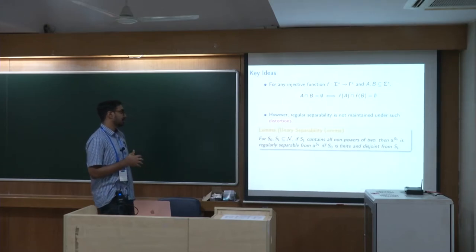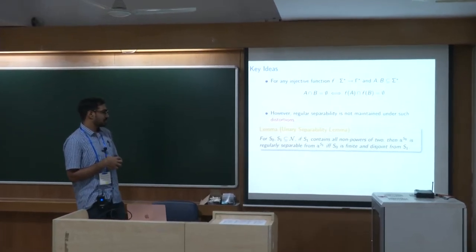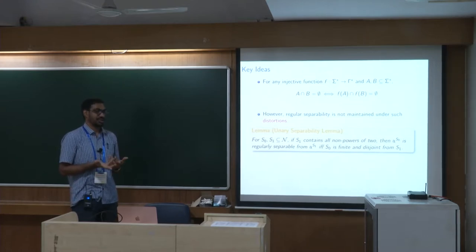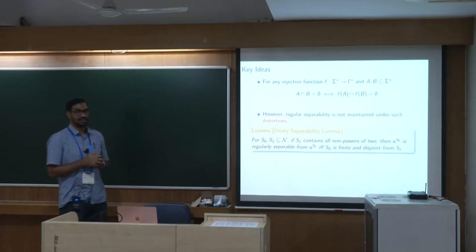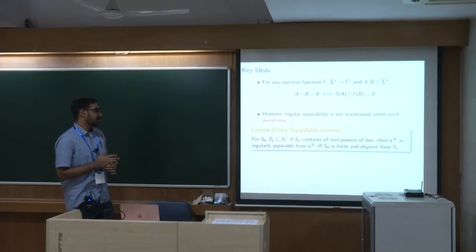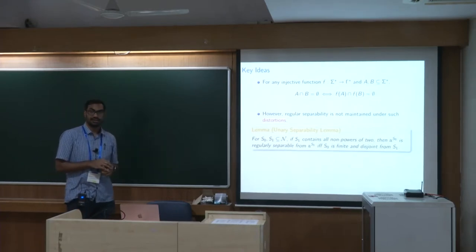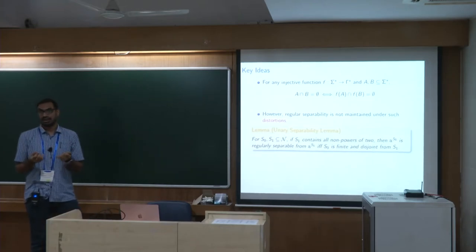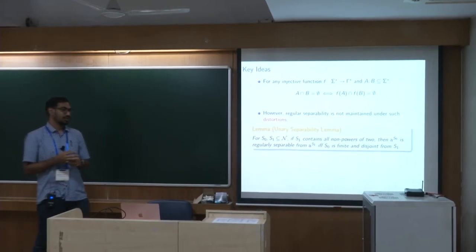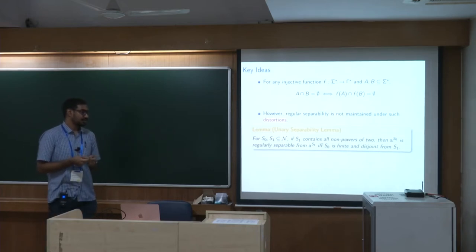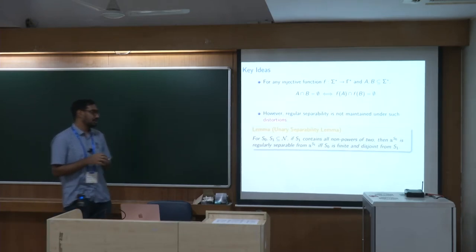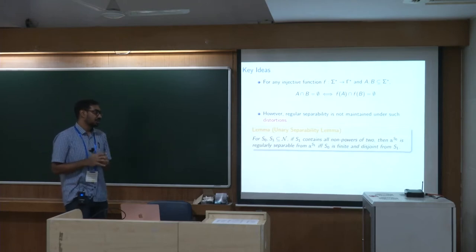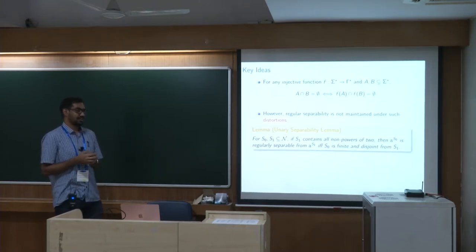Here is the key lemma: for any two subsets S0, S1 of the natural numbers, if S1 contains all non-powers of two, then the unary language a^{S0} is regularly separable from a^{S1} if and only if S0 is finite and disjoint from S1. This holds because any unitary regular language is ultimately periodic, so any infinite regular language must intersect S1. Therefore any regular separator must be finite, implying S0 must be finite.